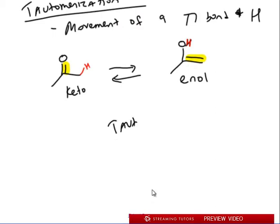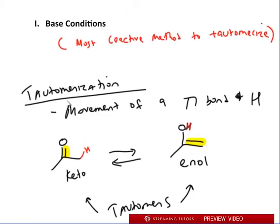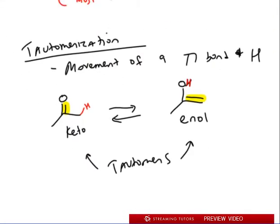These two are tautomers of each other. Remember how you have enantiomers, diastereomers, and that's kind of mirror image stuff? Well, now we have tautomers: things that are different between a pi and an H. That's it. If that's the only thing that makes them different. Let's talk about this base condition and how this works.